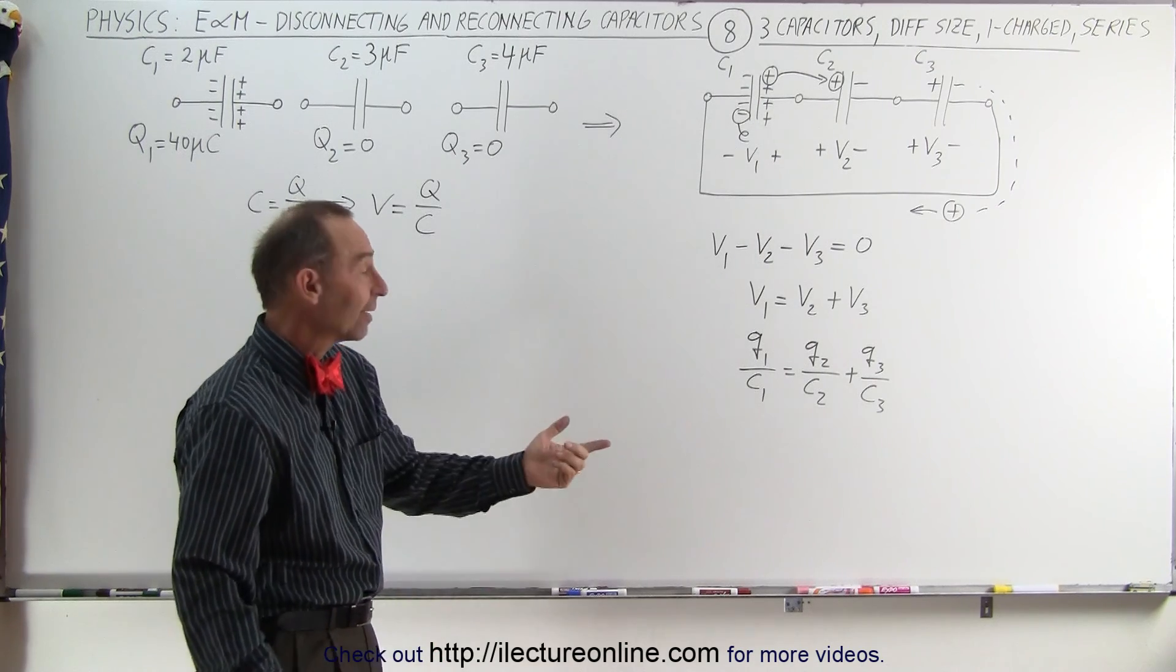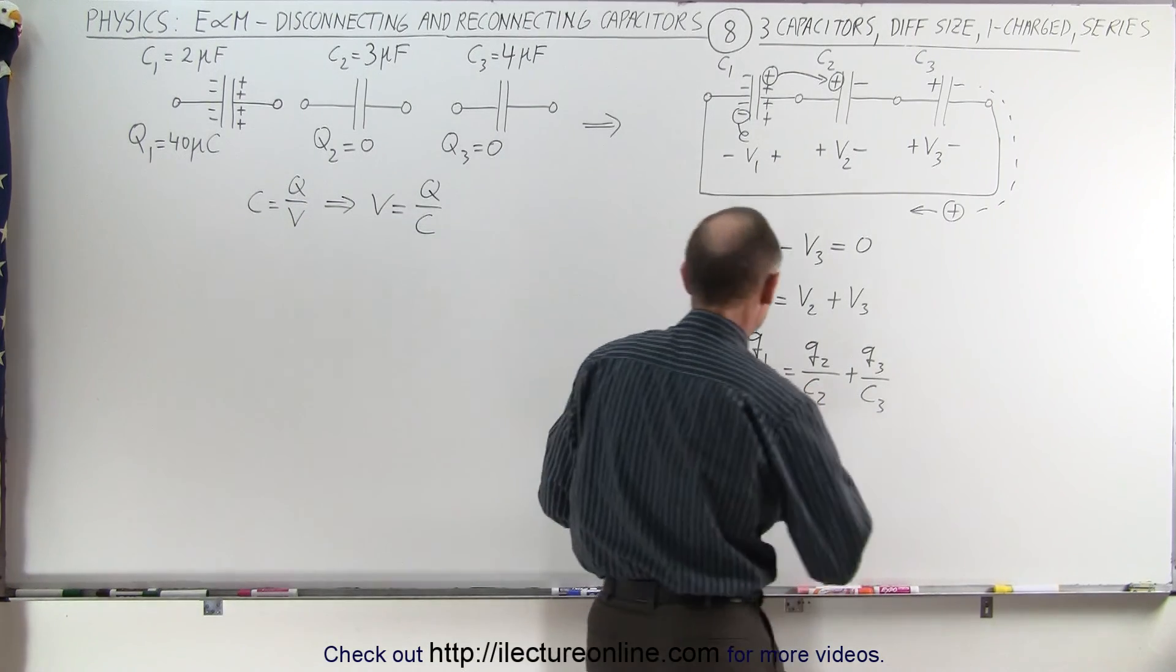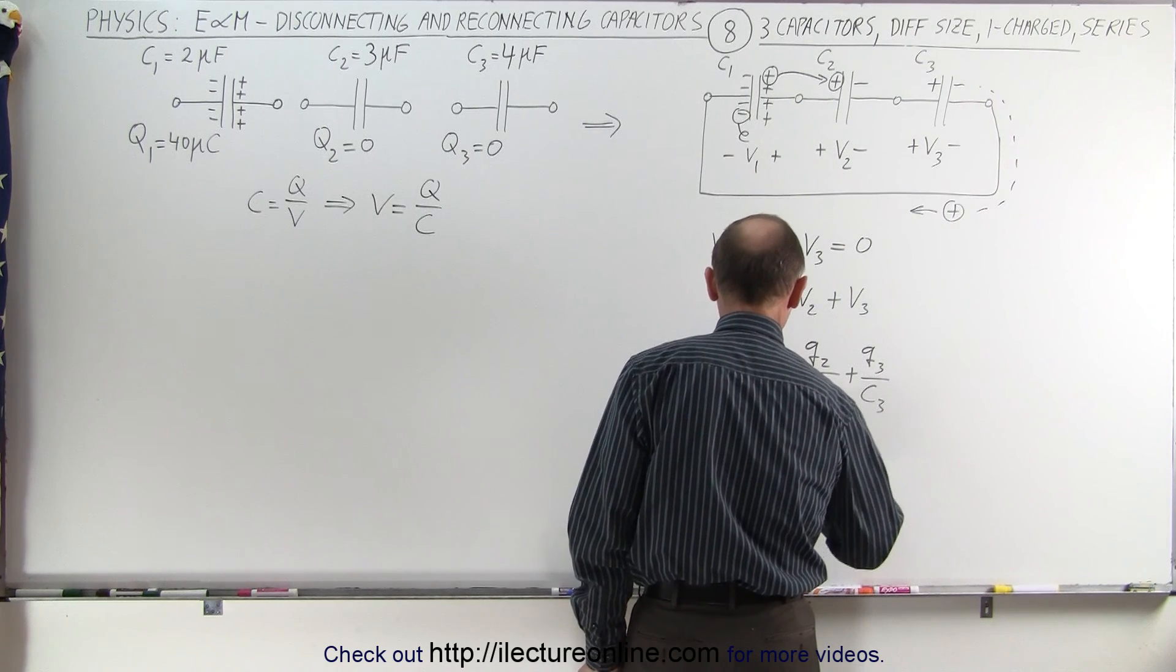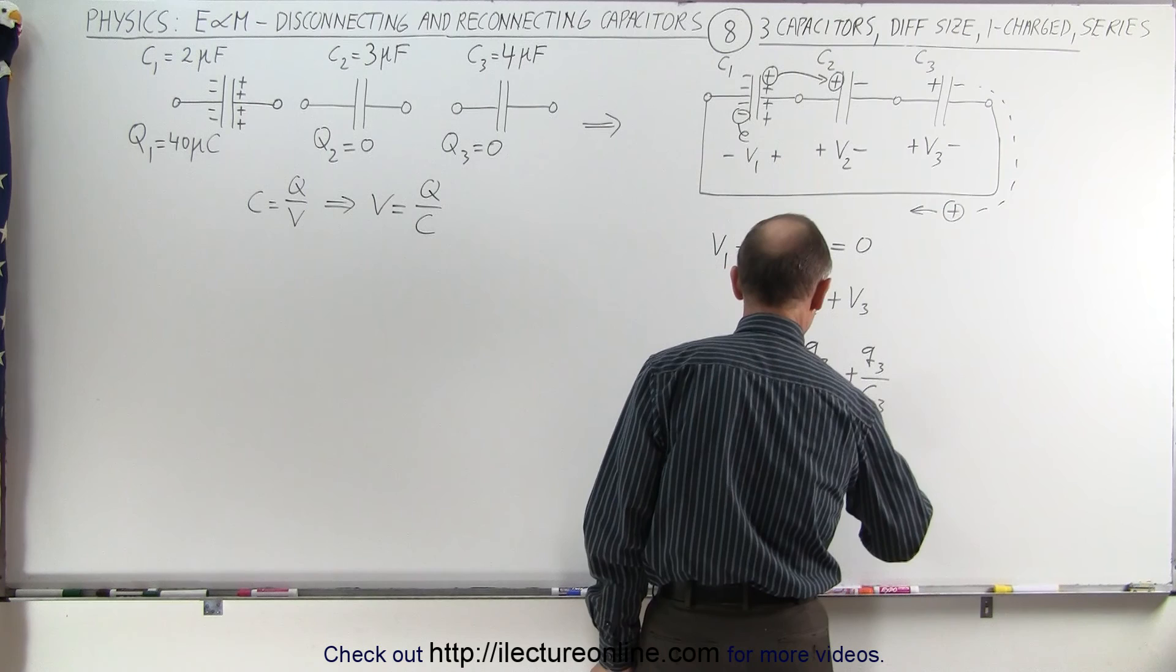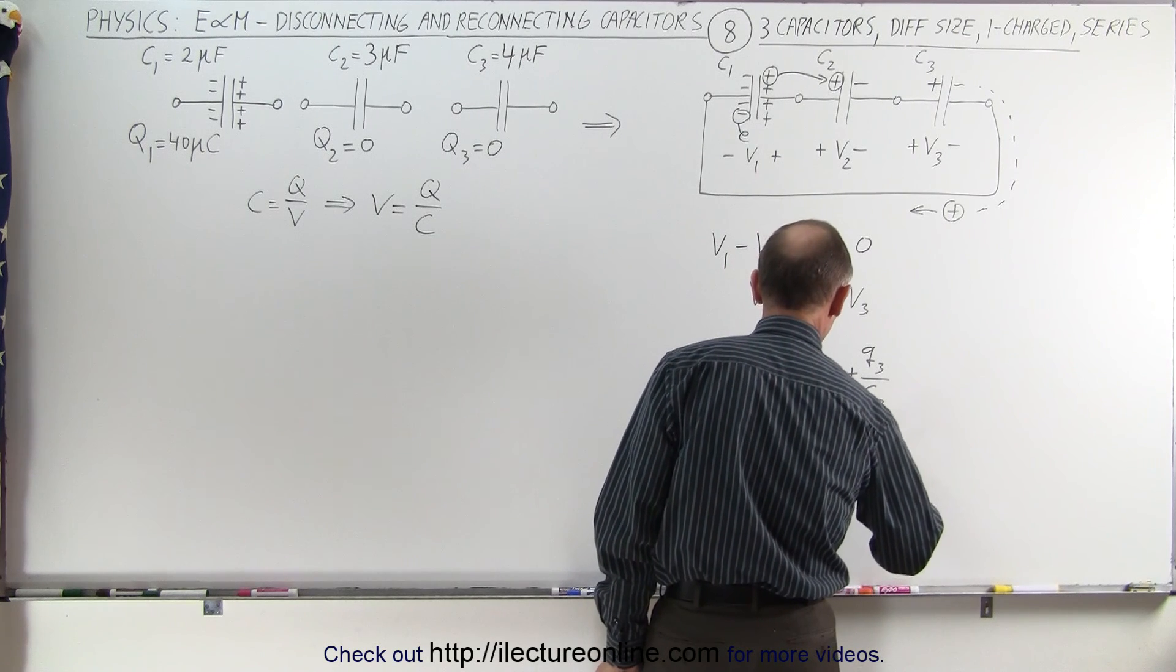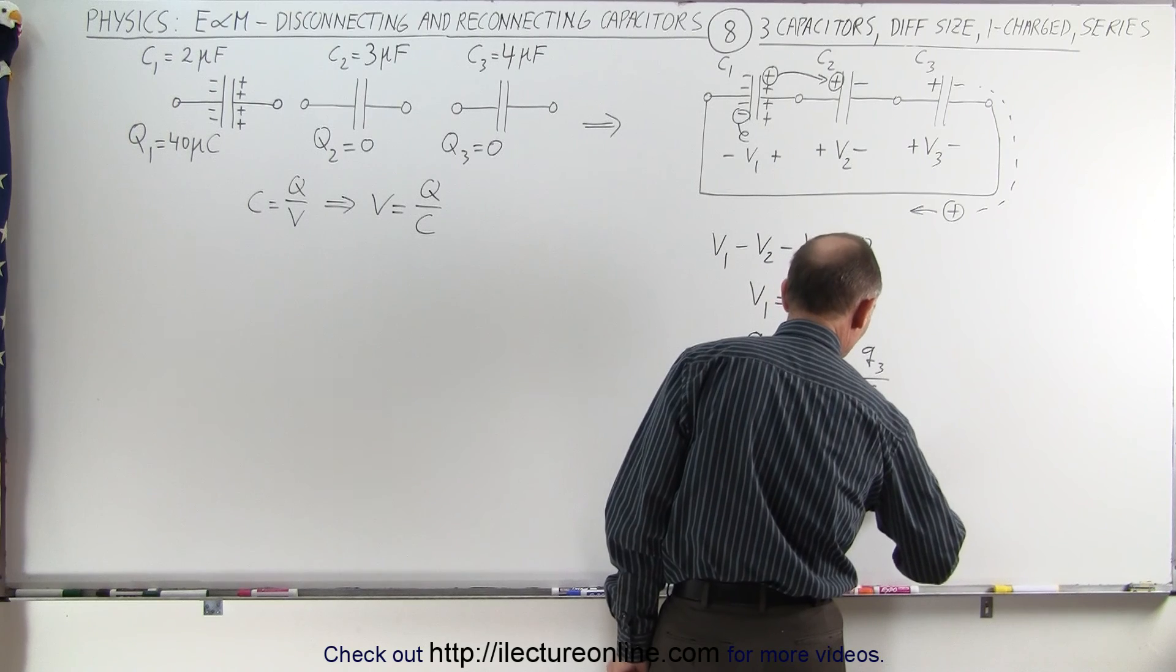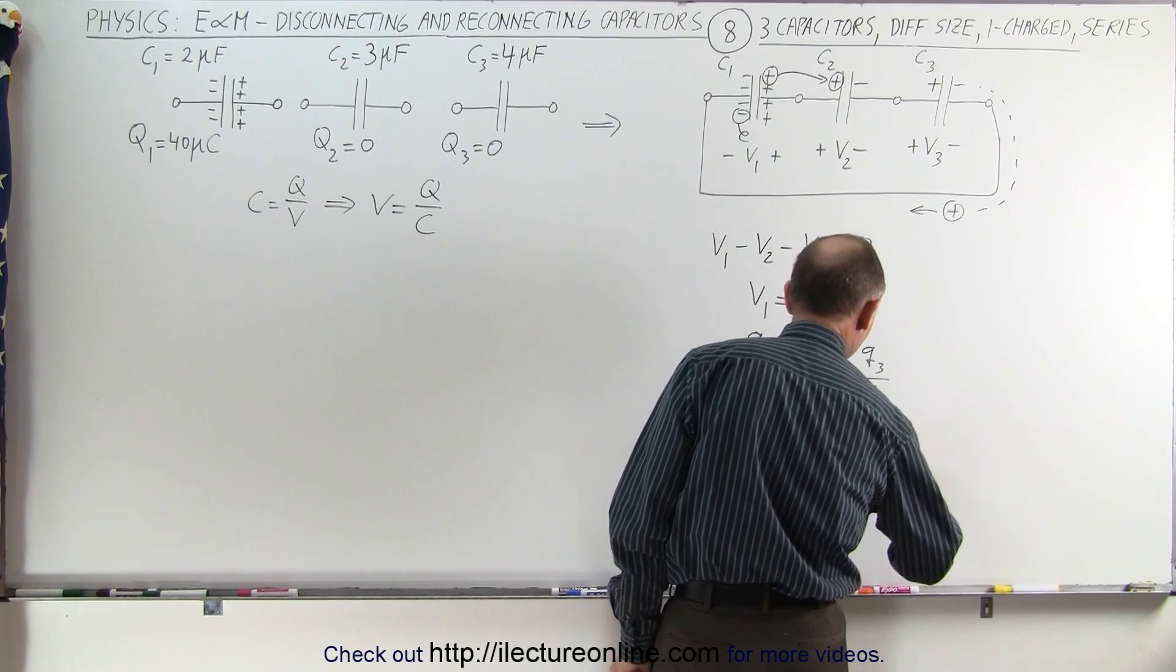Well first of all, let's replace C1, C2, and C3 with their values. Here you can see that Q1 divided by 2 is equal to Q2 divided by 3 plus Q3 divided by 4. There we go.